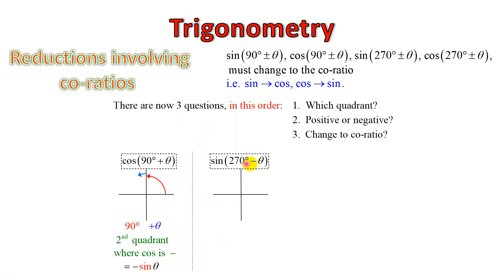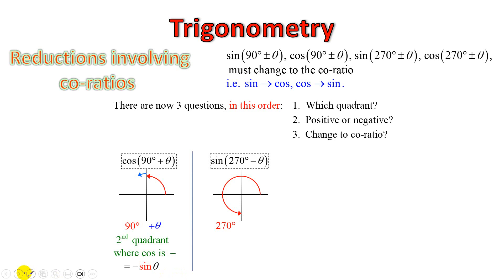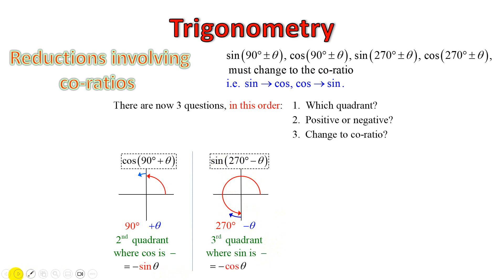If you've got sine of 270 minus theta, the first question we ask is where is 270 minus theta — that takes us into quadrant 3. There's our 270, and minus theta going back will take us into quadrant 3. In the third quadrant, sine is negative. And the co-ratio of sine is cos. So we get sine of 270 minus theta equals negative cos theta.